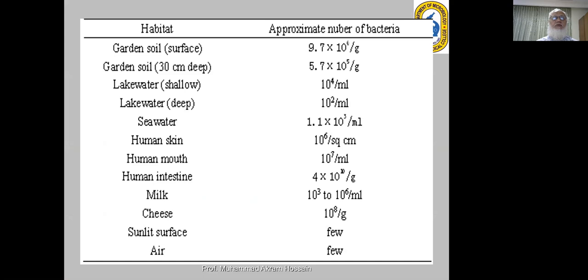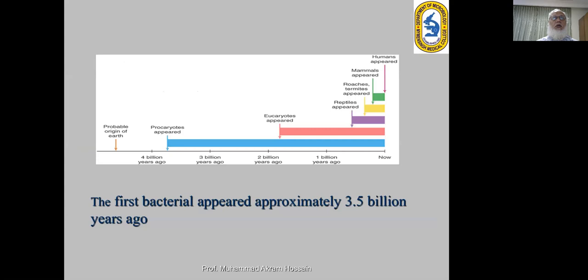Microbes are present everywhere. In the air there are few microbes, but in garden soil and even on human skin there are 10 to the power of 6 microorganisms per square centimeter. In the human mouth there are 10 to the power of 7 per ml, and in the human intestine 10 to the power of 10 per gram.